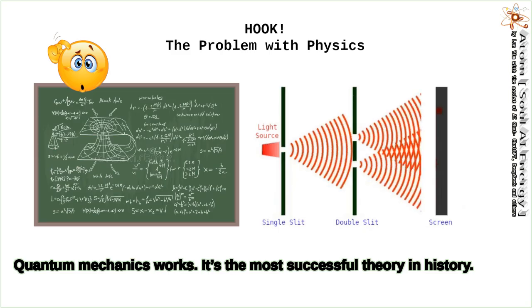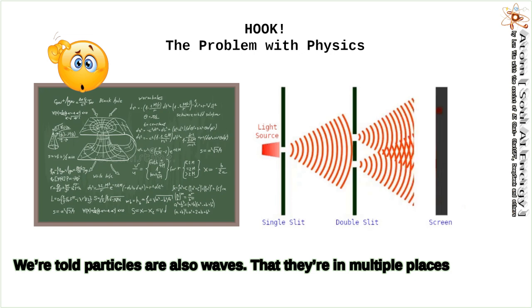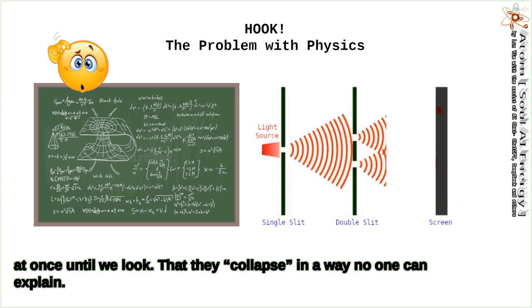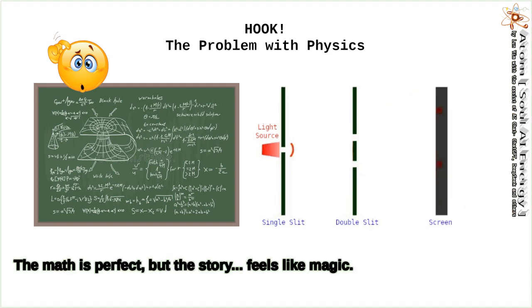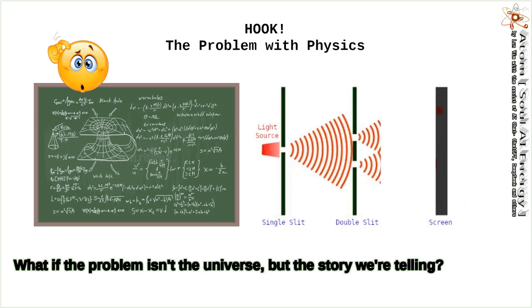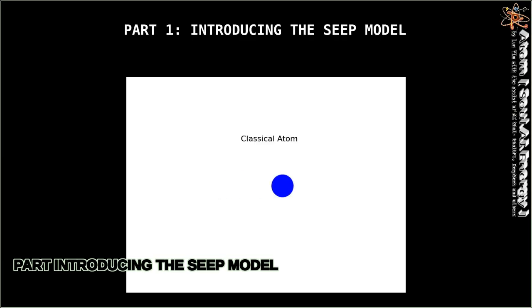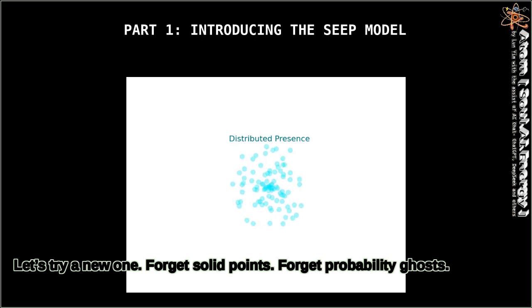Quantum mechanics works. It's the most successful theory in history. But for over a century, it has come with a cost: confusion. We're told particles are also waves, that they're in multiple places at once until we look, that they collapse in a way no one can explain. The math is perfect, but the story feels like magic. What if the problem isn't the universe, but the story we're telling? What if we've been using the wrong metaphor? Let's try a new one.